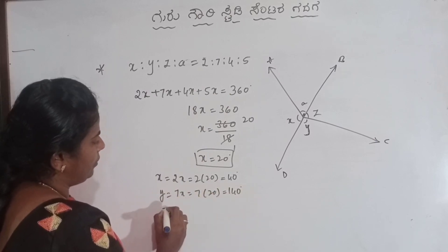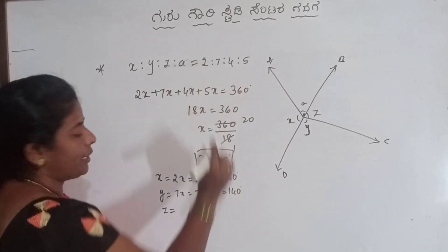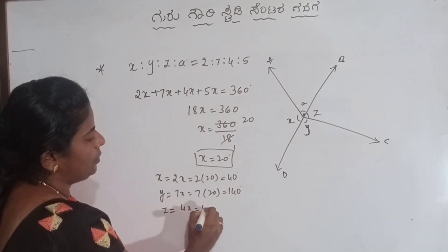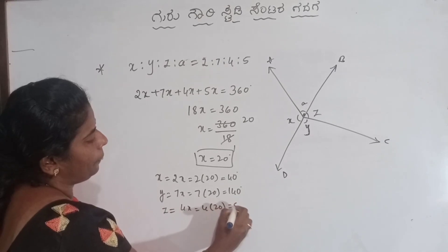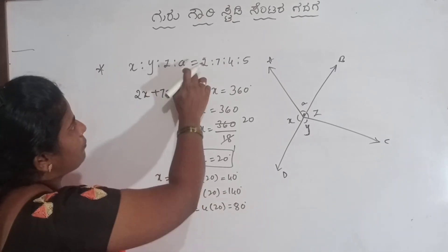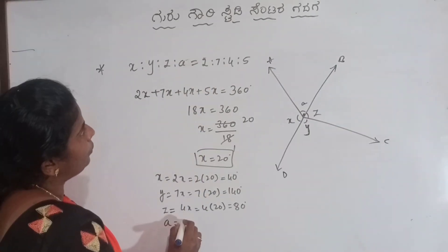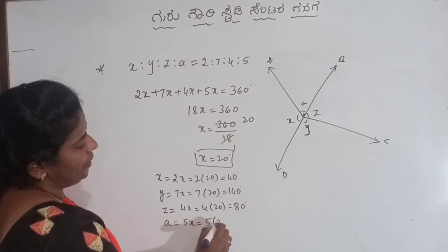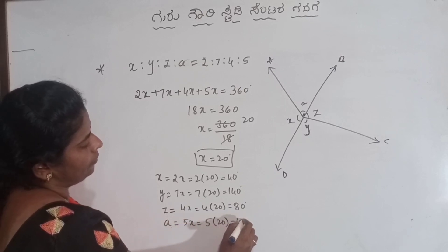Next, Z angle: 4x. x value — a, b, c. Next, last one: a equal to 5x equal to 5 into 20 means 100 degree.